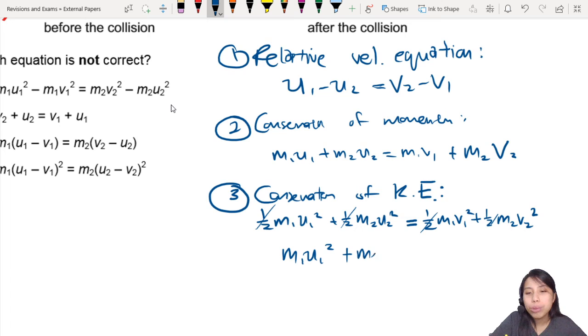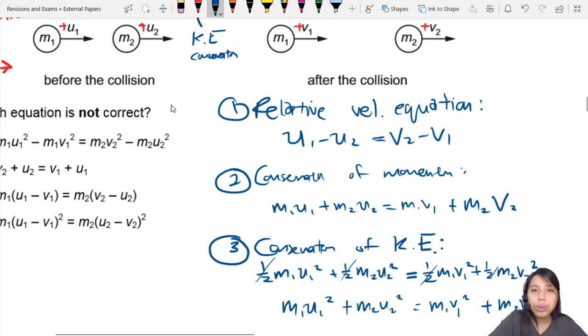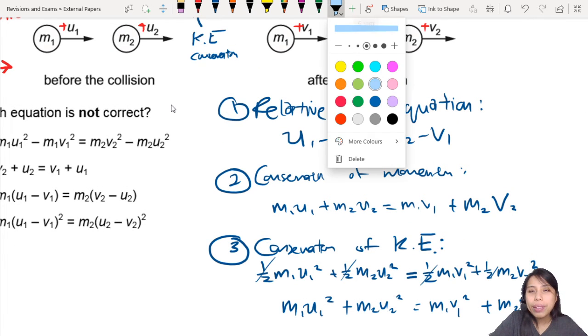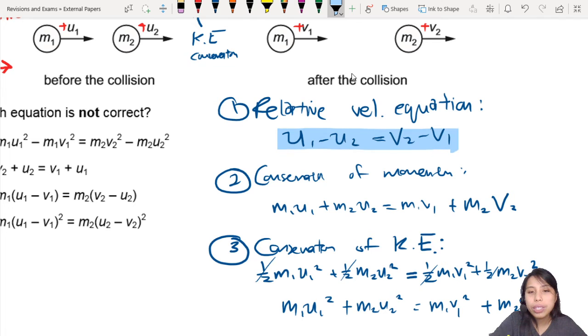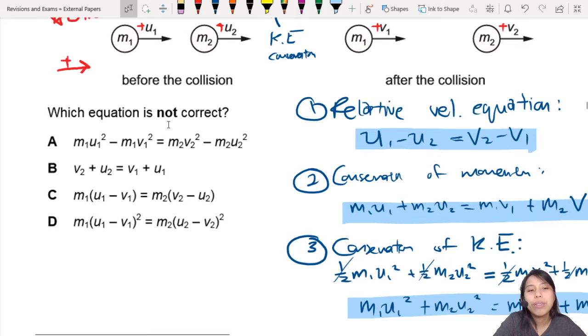So M1U1, M2U2, M1V1. I'm just writing this out so we can see with our own eyes. Okay, that took a while. So we have everything we need now. We have this equation, this equation, and this equation. And we need to check all of them to see which one is correct.